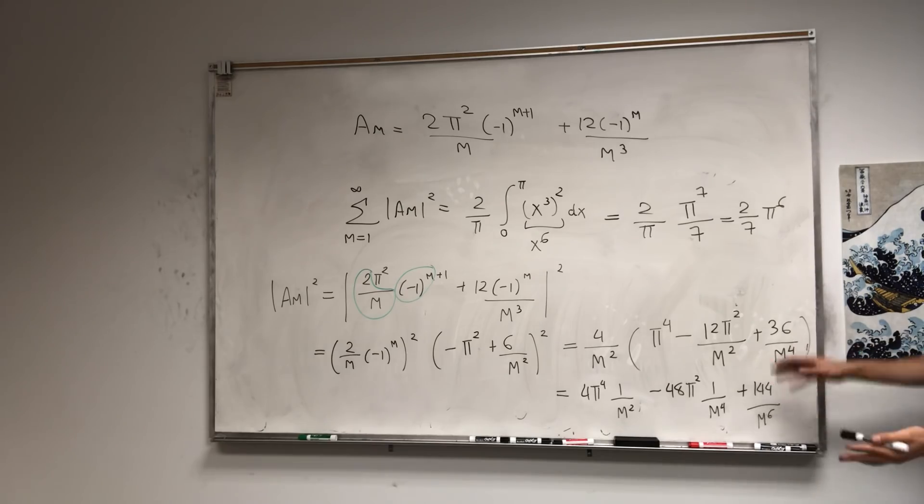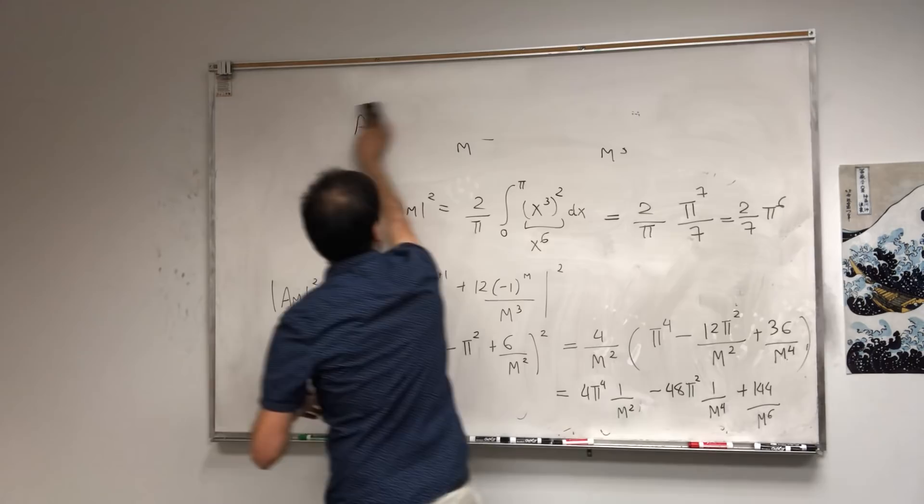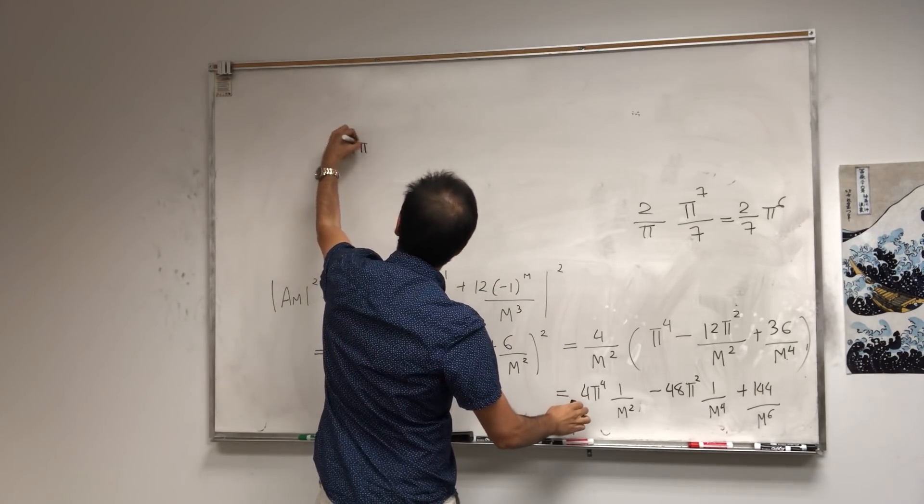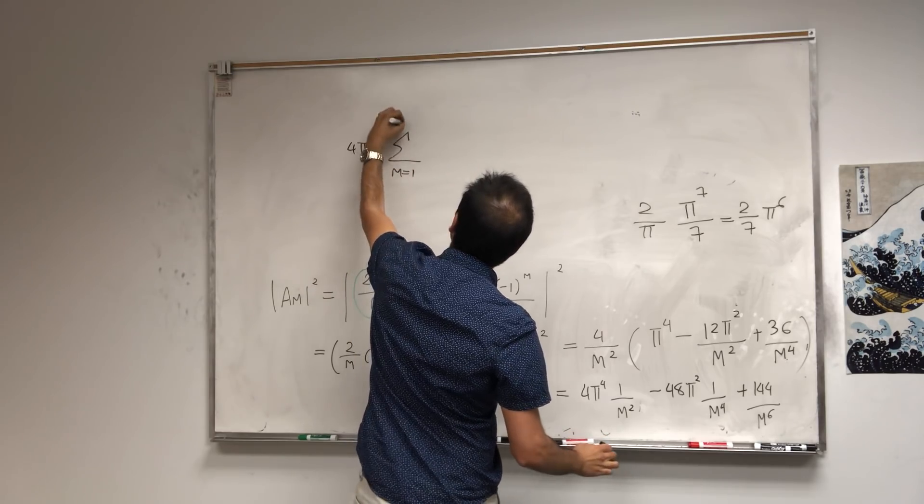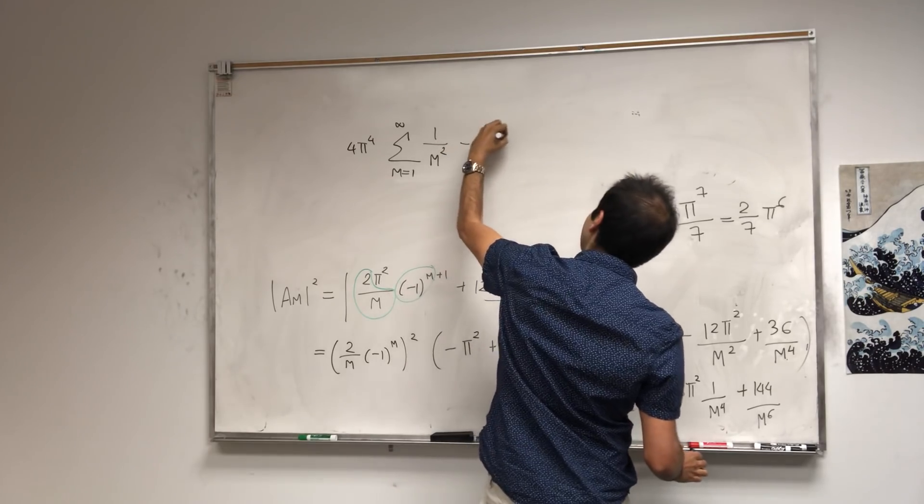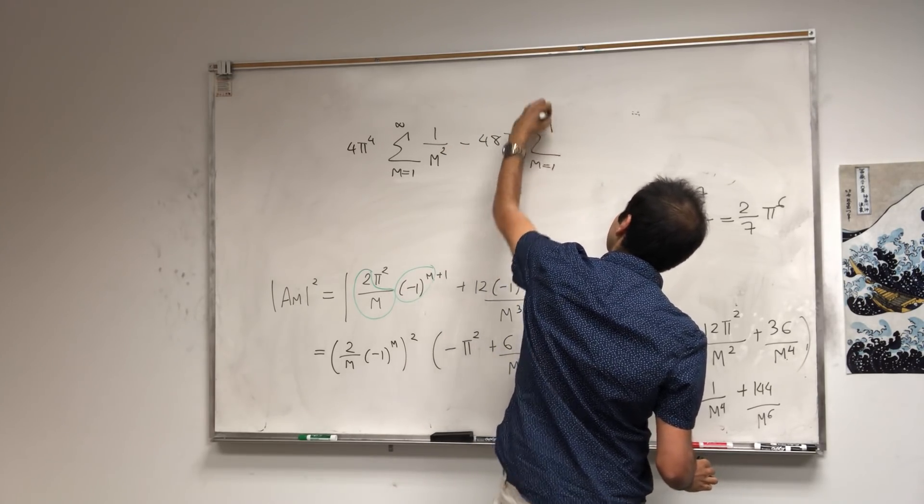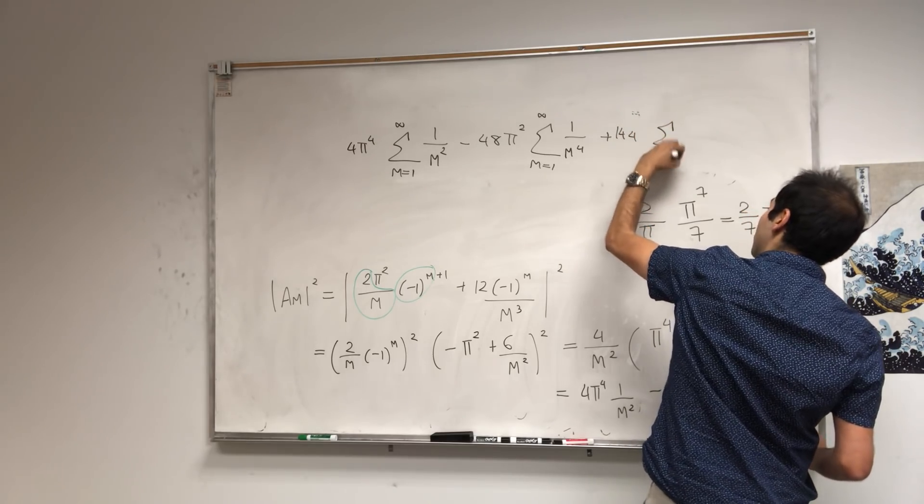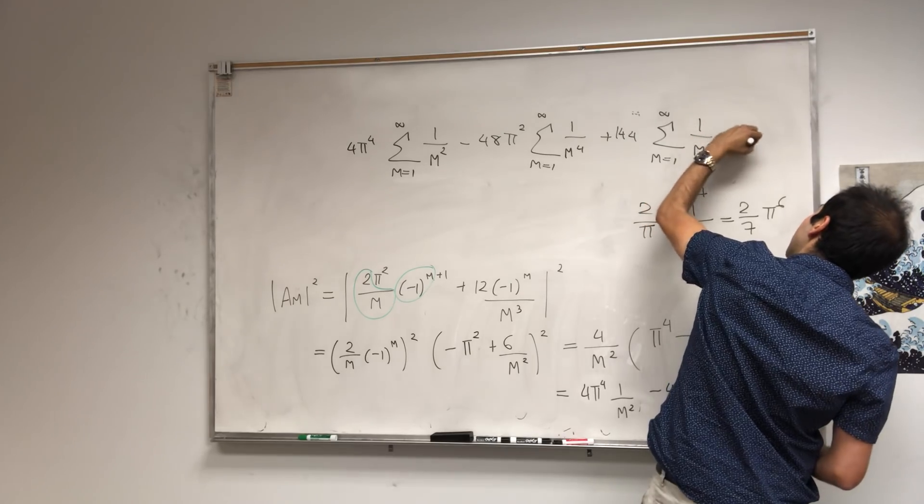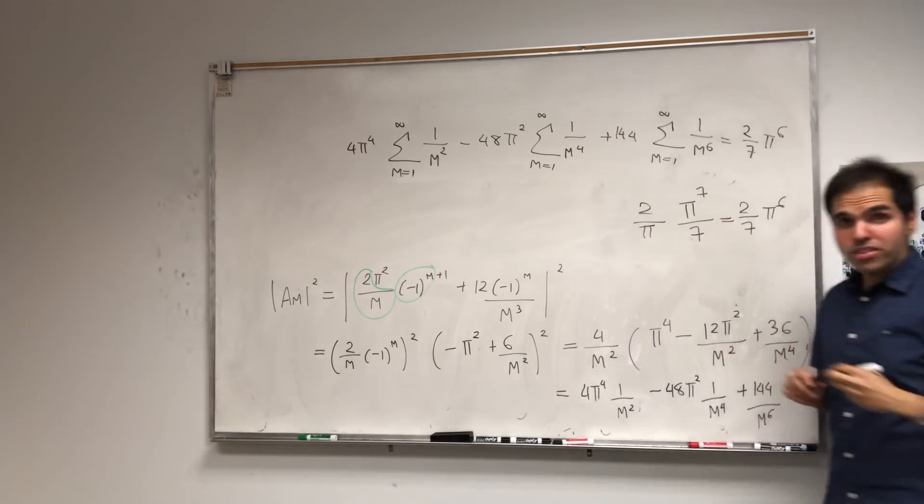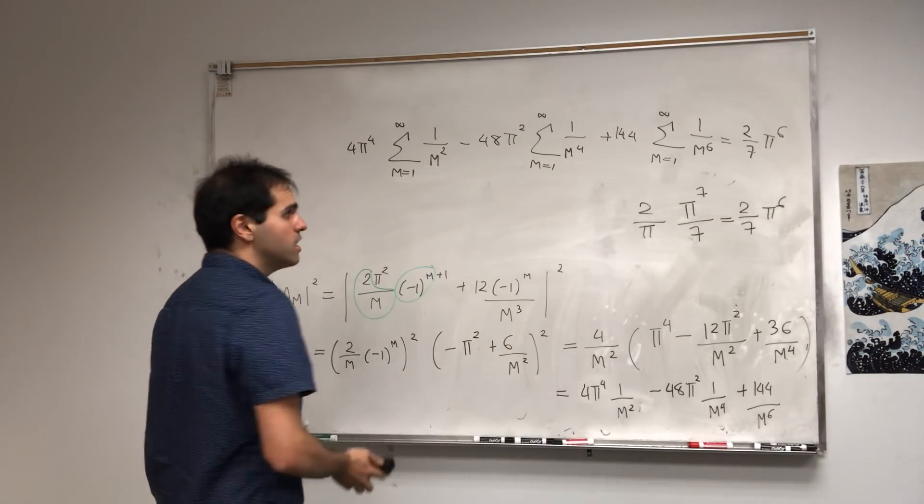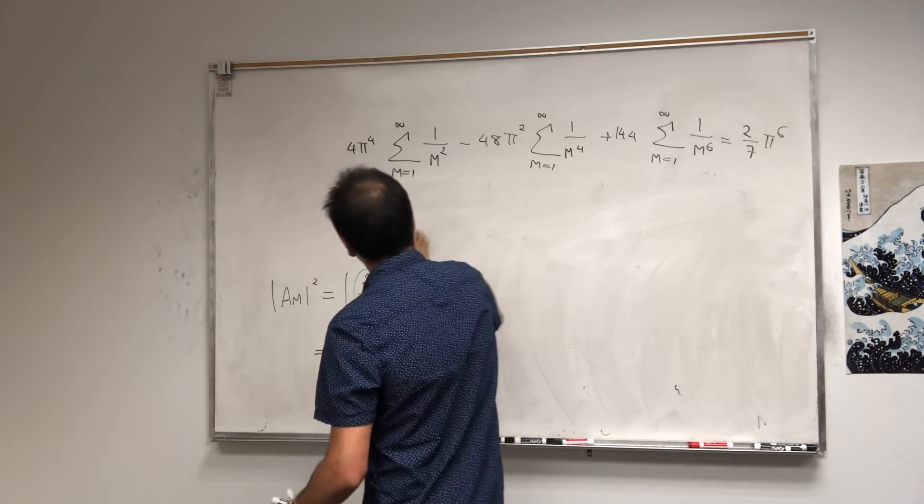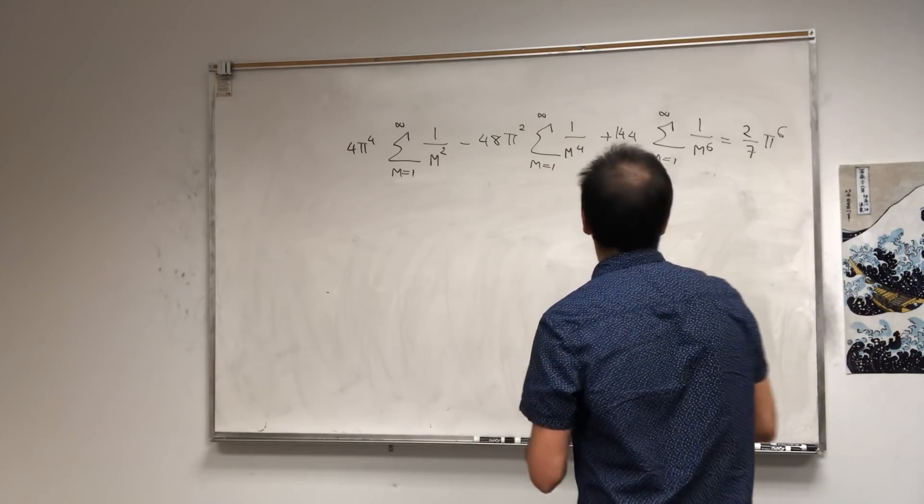Which you can simplify to 4 pi to the 4th times 1 over m squared, and then minus 48 pi squared times 1 over m to the 4th, and then plus 144 over m to the 6th. And this is nice, so all you need to do is take the sum of this and equate it to 2 7ths pi to the 6th. And notice, there's something recursive going on, because to evaluate the sum of 1 over m to the 6th, you need the previous sums. The m squared sum and the 1 over m to the 4th sum.